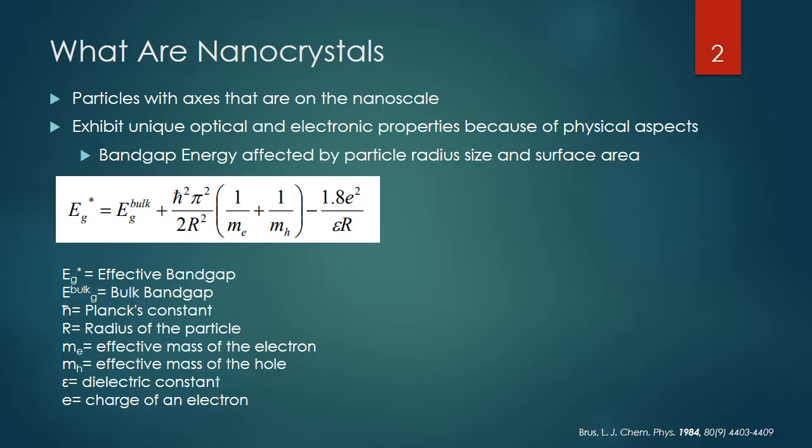This equation is the effective mass model put out by Brus in the year 1984. In this model, he is basically relating what the bandgap energy is for the bulk material to what it would be for the nanoparticle. I have outlined all the variables below.